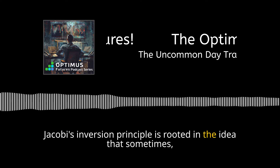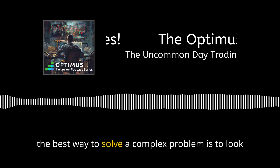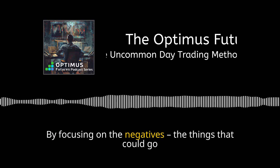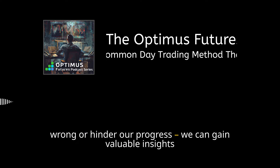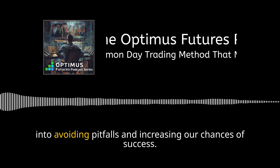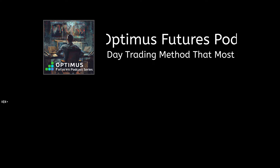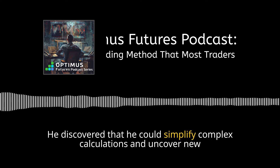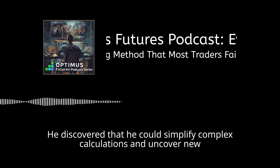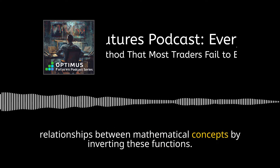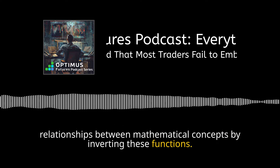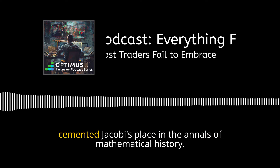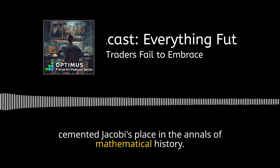Jacobi's inversion principle is rooted in the idea that sometimes the best way to solve a complex problem is to look at it from a different angle. By focusing on the negatives — the things that could go wrong or hinder our progress — we can gain valuable insights into avoiding pitfalls and increasing our chances of success. Jacobi applied the inversion principle in mathematics, discovering that he could simplify complex calculations and uncover new relationships between mathematical concepts by inverting these functions. This groundbreaking approach led to significant advancements in the field.